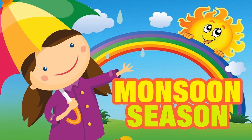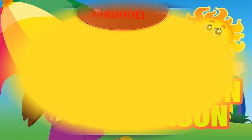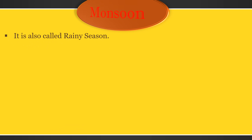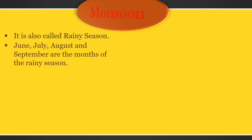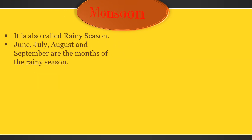Now, monsoon season. It is also called rainy season. June, July, August and September are the months of rainy season.